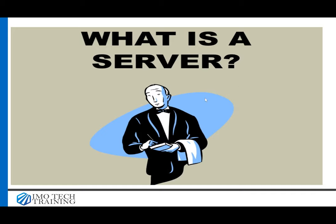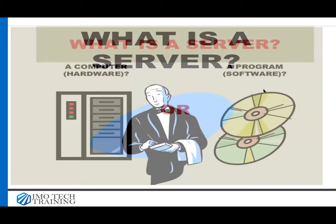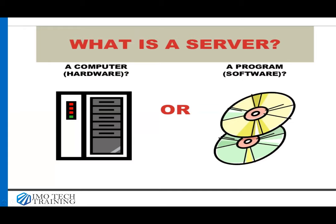A server is basically made up of two things: a computer and a program. The computer itself is the hardware, and then there's a program you install on that computer that makes it a server. Every computer is made up of two parts — you have the hardware and you have the software.